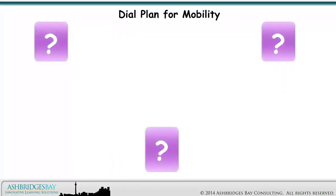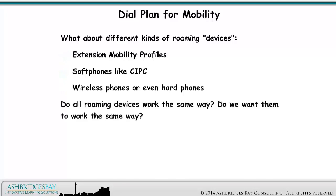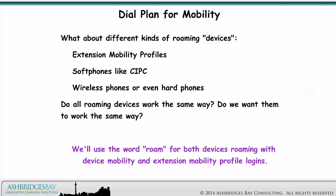So many questions. What about different kinds of roaming devices? Extension mobility profiles, soft phones like CIPC, and wireless phones, or even hard phones. Do all roaming devices work the same way? Do we want them to work the same way? We'll use the word roam for both devices roaming with device mobility and extension mobility profile logins.